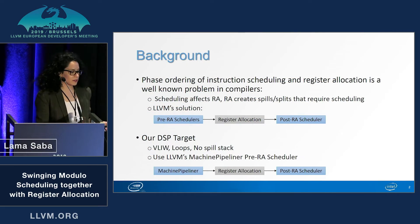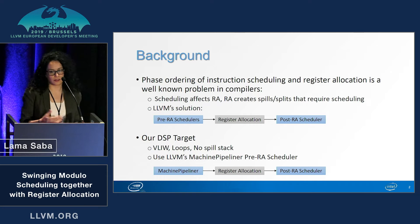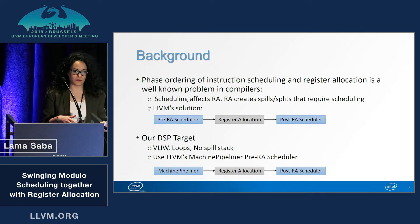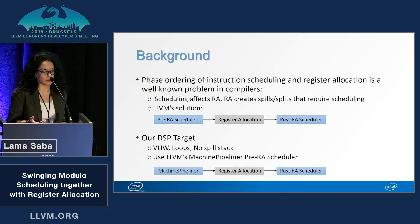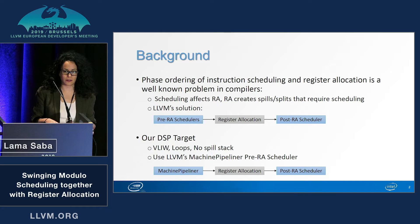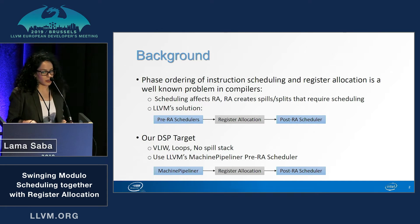Phase ordering of instruction scheduling and register allocation is a well-known problem in compilers. The scheduler affects the RA decisions and the RA creates spills or splits that need to be scheduled. LLVM's modular solution for this is to have three phases: pre-RA scheduling, then RA, and then post-RA scheduling.